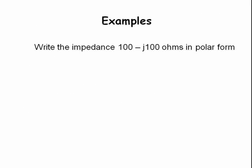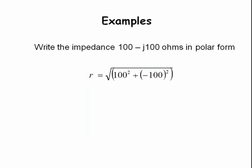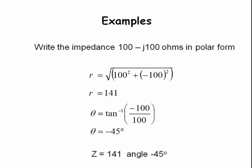Here is our first example problem. Write the impedance 100 minus J100 in polar form. The impedance will be the hypotenuse of this right triangle. Notice that both sides are the same length, 100. In this problem, we must first calculate the length of the hypotenuse. The hypotenuse is the square root of the quantity 10,000 plus 10,000. This gives us an impedance of 141 ohms. Next, we must calculate the phase angle of a rise of minus 100 and a run of 100. The phase angle is minus 45 degrees. Our answer in polar form is an impedance of 141 ohms and an angle of minus 45 degrees.